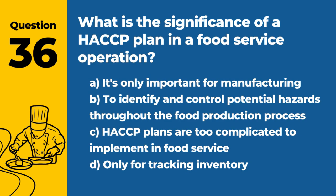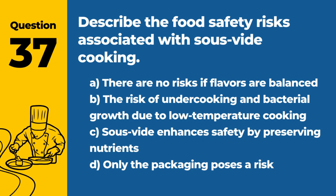Question 36. What is the significance of a HACCP plan in a food service operation? The answer is B: To identify and control potential hazards throughout the food production process. A HACCP plan is a proactive approach to food safety.